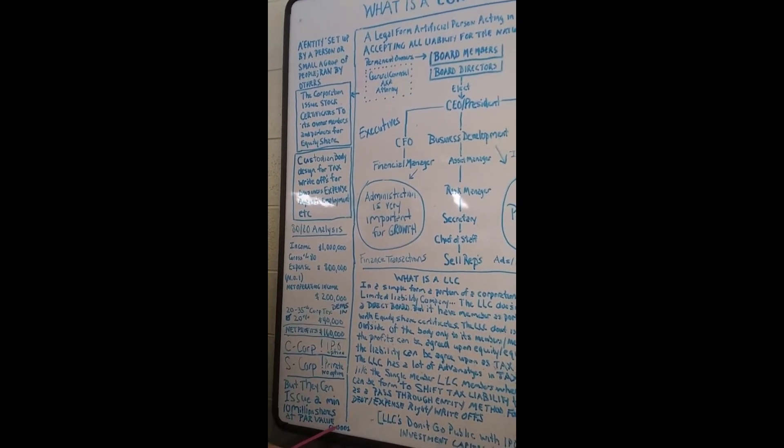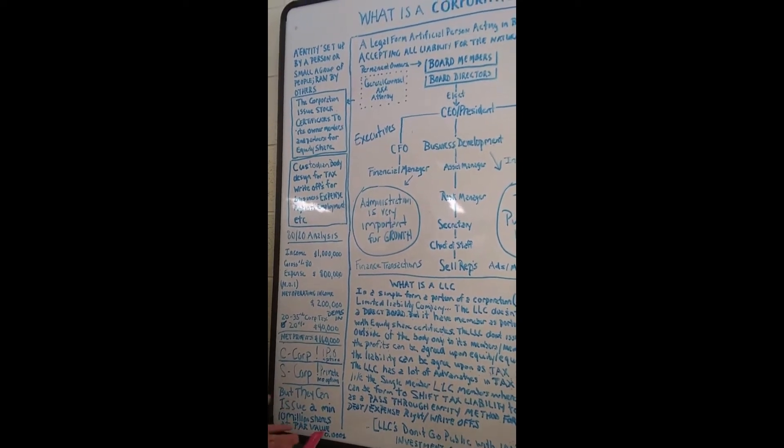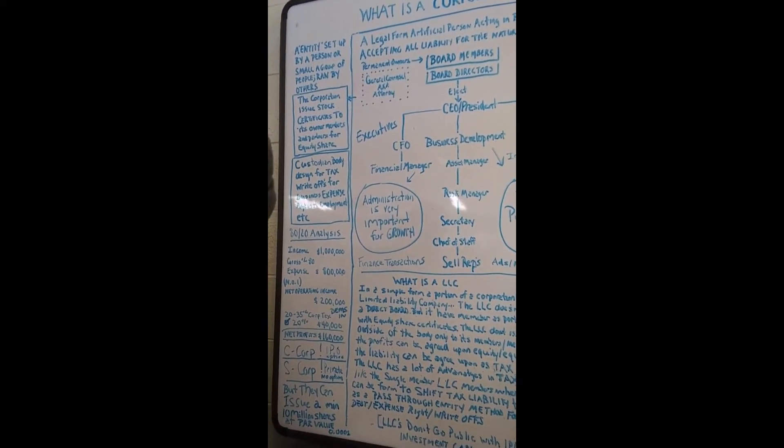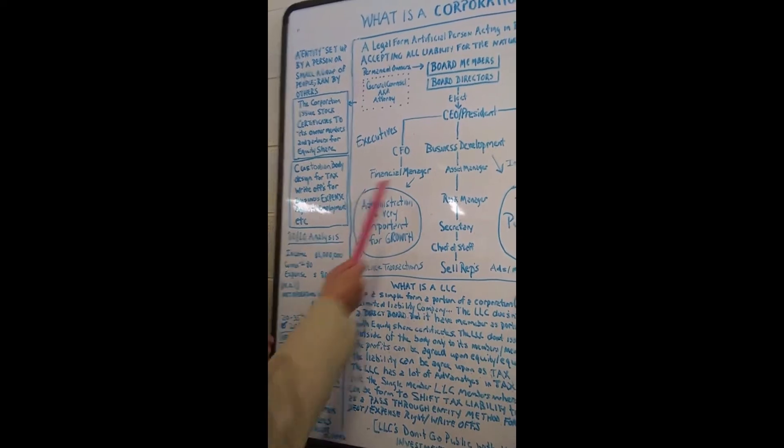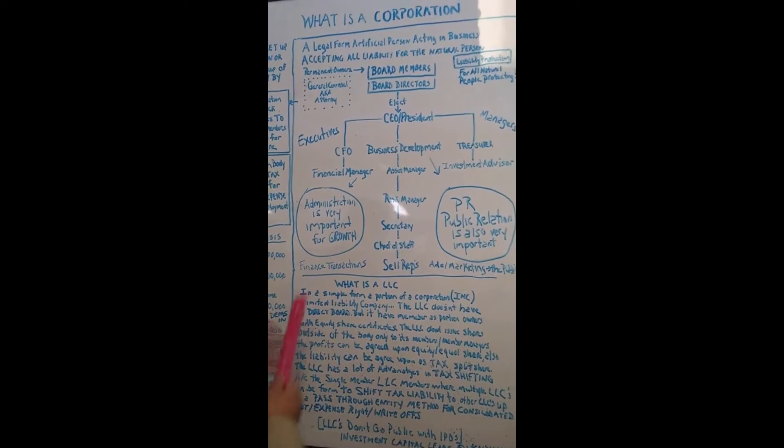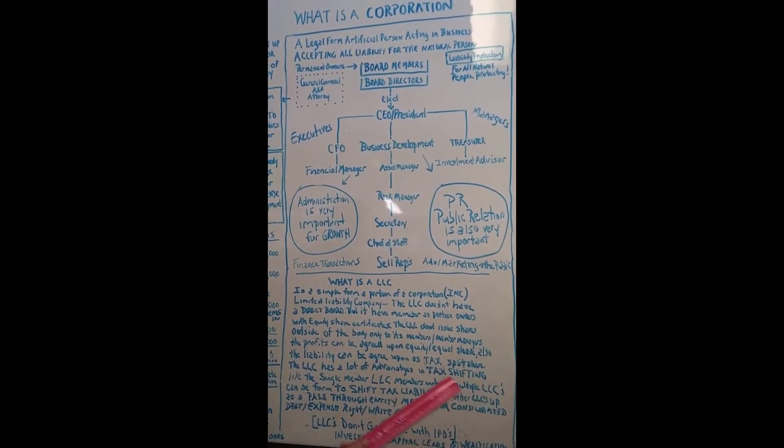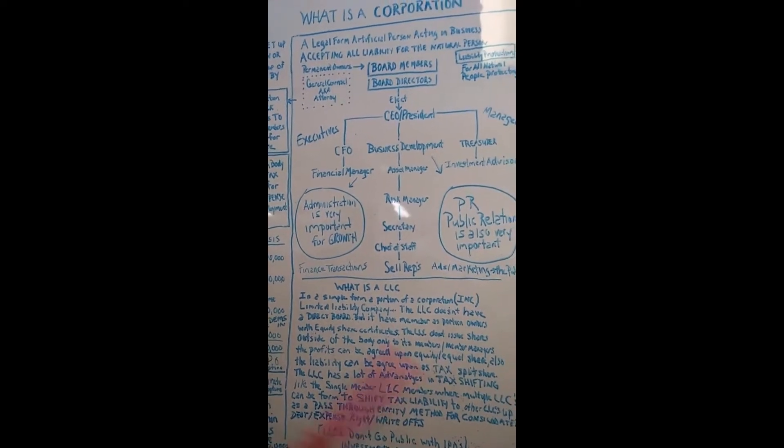But they both can issue a minimum of 10 million shares at $0.001, less than a penny. But we'll see. We can issue that. A dollar. There's $200,000. Maybe your corporation, paper value weighted at about a million dollars. We're going to put on paper, let's go crazy with this, a million dollars by the companies on paper.